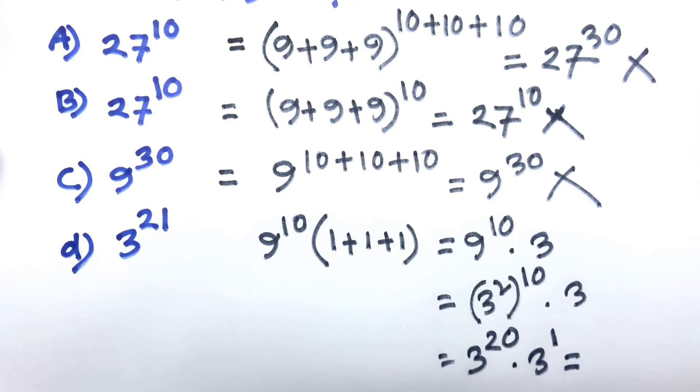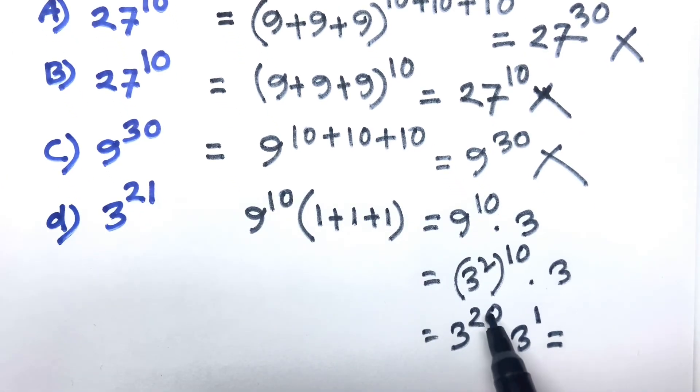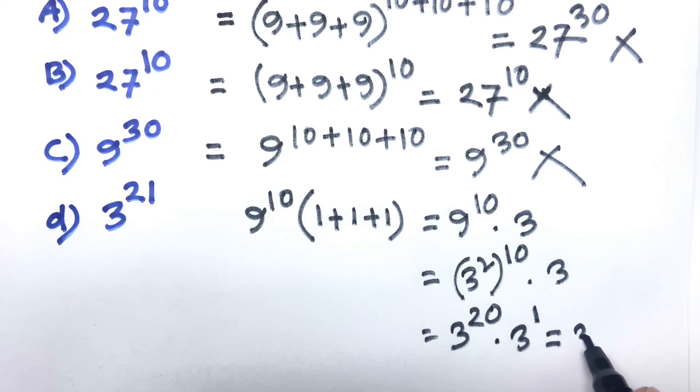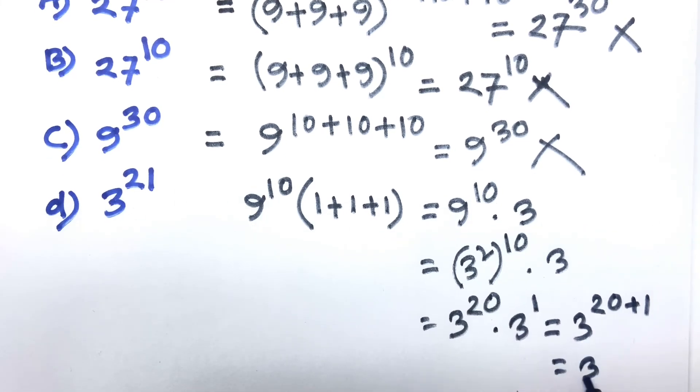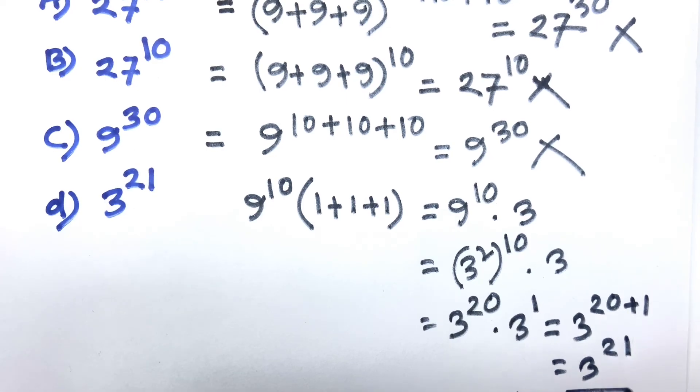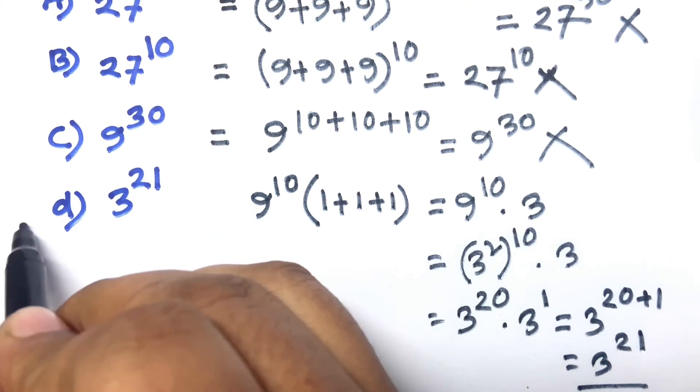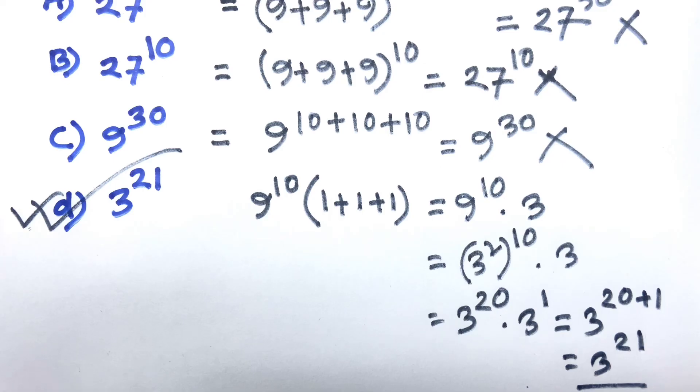According to exponential rules, we know that a^n times a^m equals a^(n+m). So I can say 20 + 1, and here is 3^21. So this is the right answer, so number D is the correct answer. Thank you all.